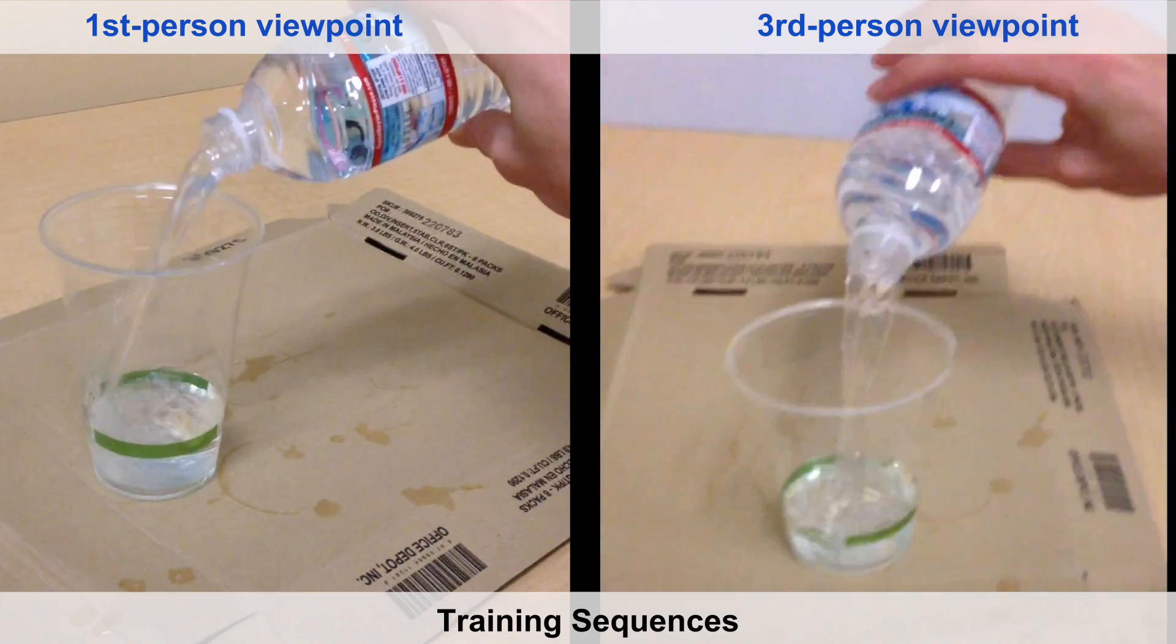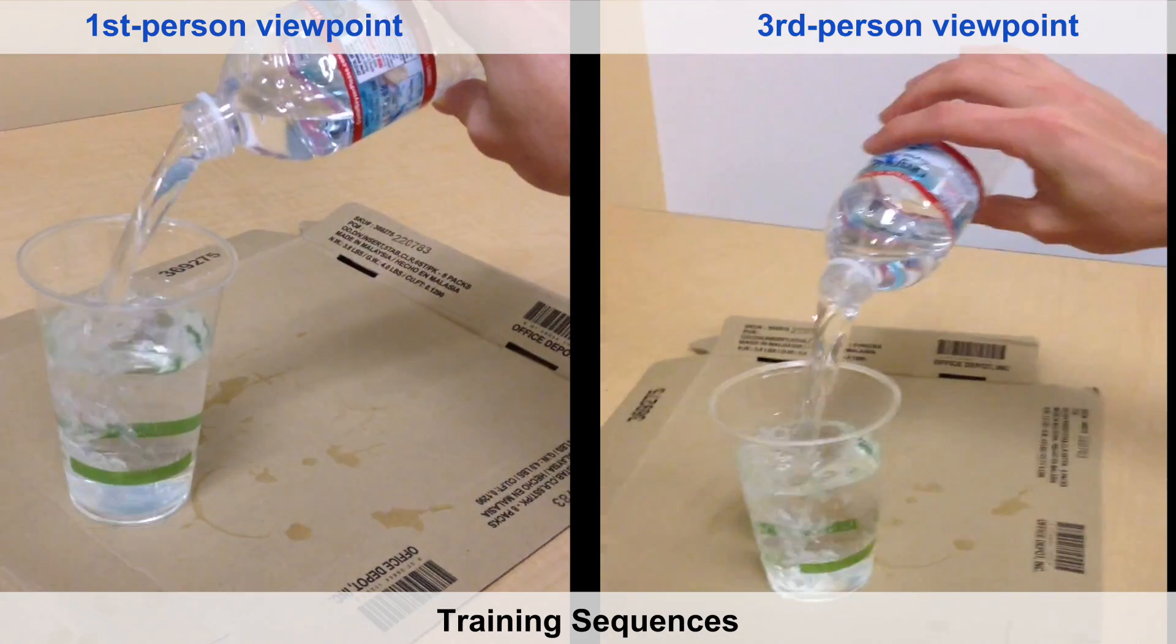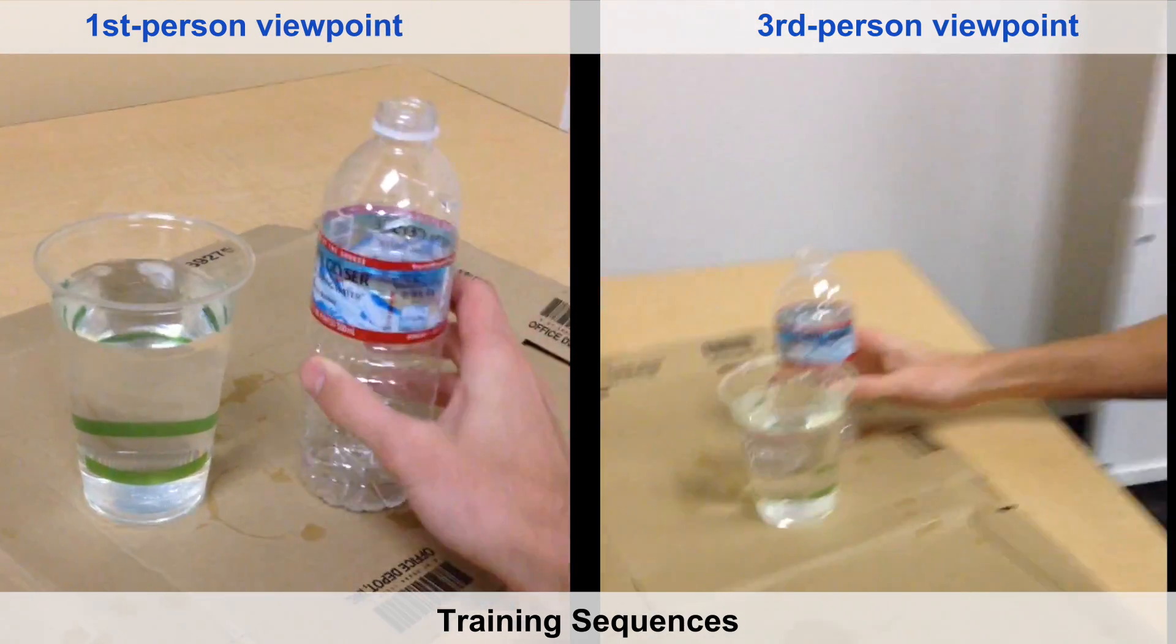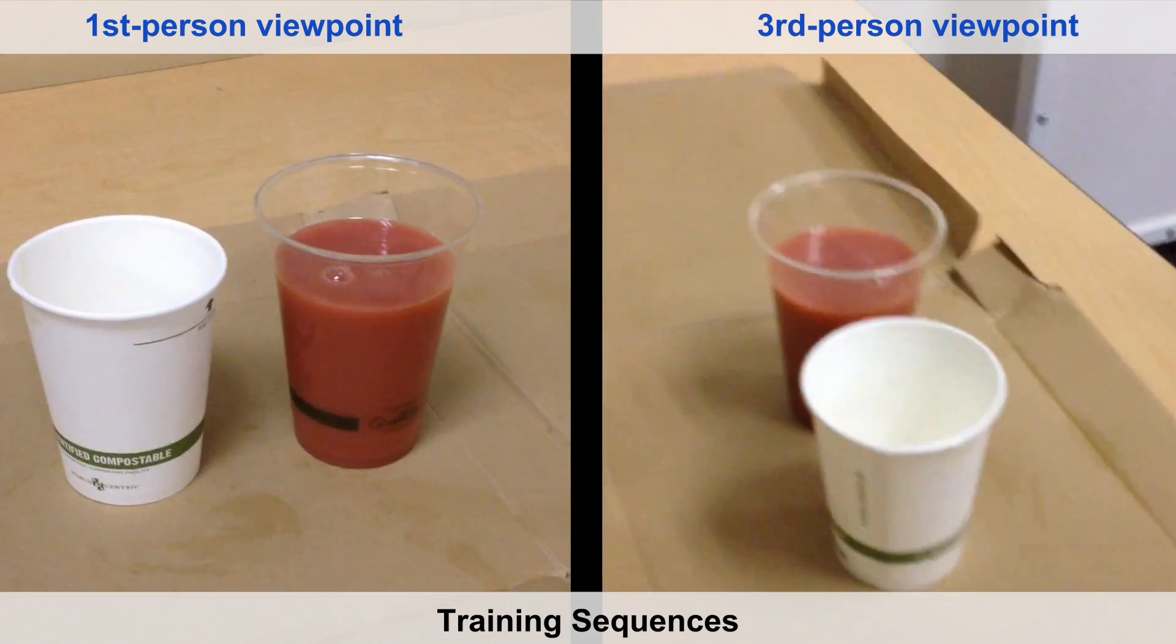The model is trained on one multi-view demonstration at a time. While two views of the same demonstration are synchronized, no correspondence between different demonstrations is ever provided.